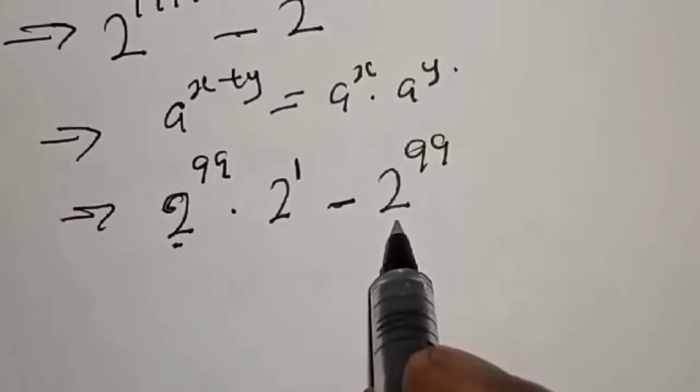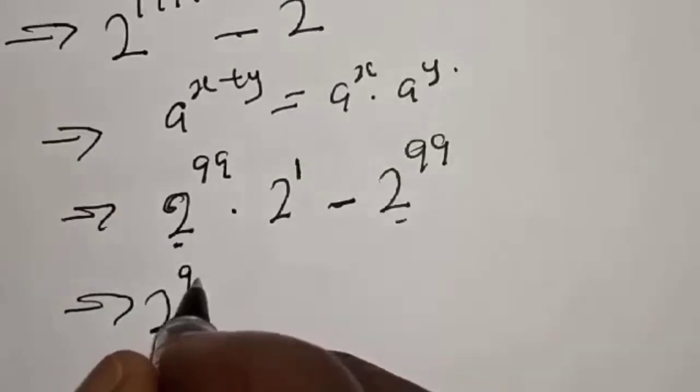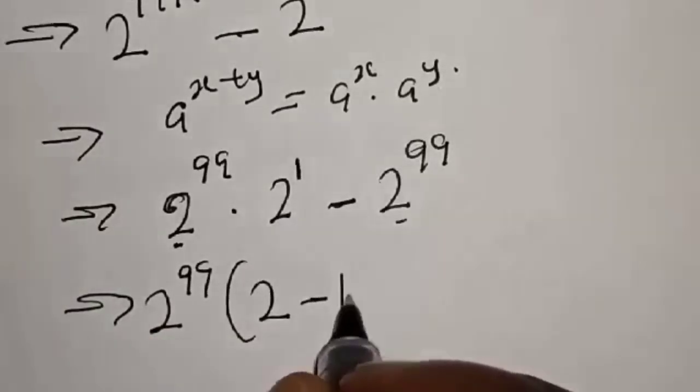We have 2 raised to power 99 here and 2 raised to power 99 there, let's factor it out. 2 raised to power 99 times 2 raised to power 1, which is 2, minus 1.